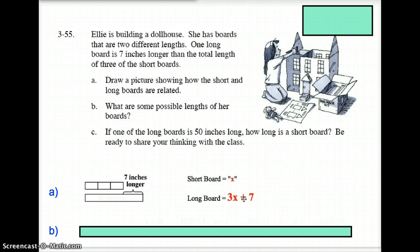So what are some possible lengths for the boards? Well, let's just take some examples here. If we were to say that x equals 10, well if this was 10 and this is 10 and this is 10, and we know the long board is 7 inches longer than all three of those put together, 10 plus 10 plus 10 is 30 plus 7 more is 37.